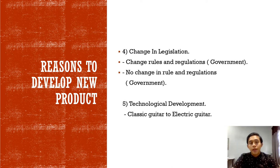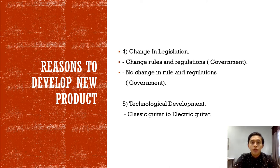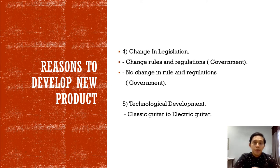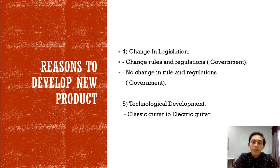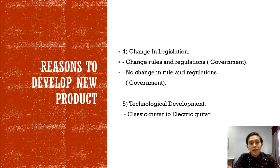Our last reason is technological development. The improvement from classical to modern technology is good for human invention. With the rise of new technological development and advancement, the price is also rising. For example, from classical guitar to electric guitar — classical guitar uses strings to make sound, while the electric guitar uses electricity to amplify sound. The price of an electric guitar is higher than a classical guitar, so we want to provide cover and protection if anything happens to that electric guitar.